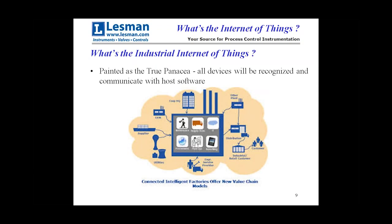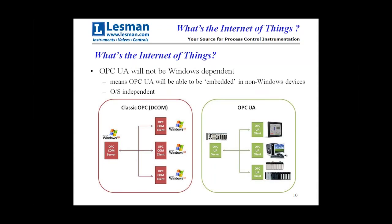OPC UA has been painted as a true panacea — all devices will be recognized and communicate with software. One key way it accomplishes this is by not being Windows-dependent. The classic OPC always required a Windows box for both server and client. OPC UA drops the Windows requirement, making it operating-system independent. The big deal is that OPC can now be embedded directly in devices like PLCs without needing a Windows operating system to run.